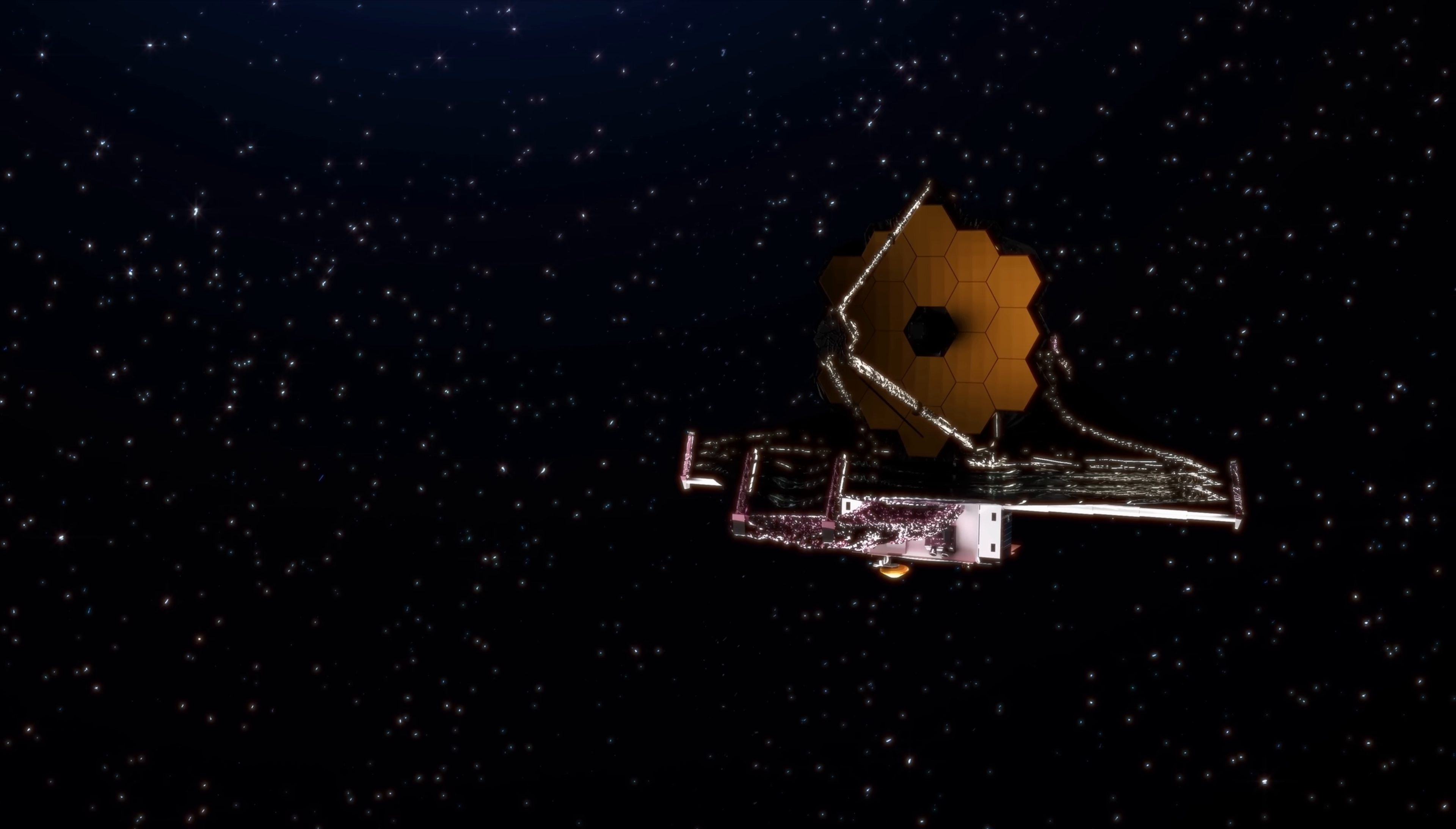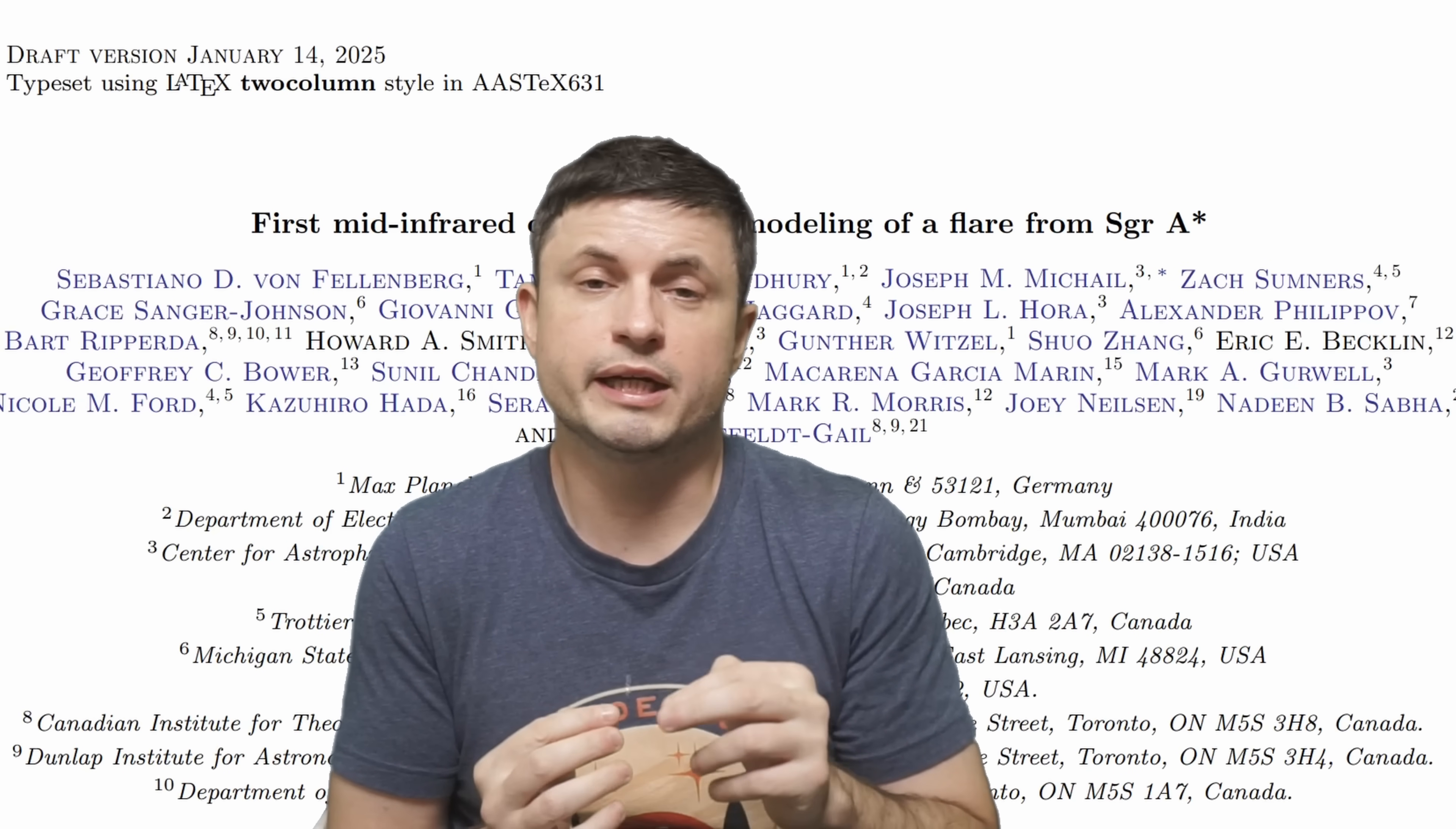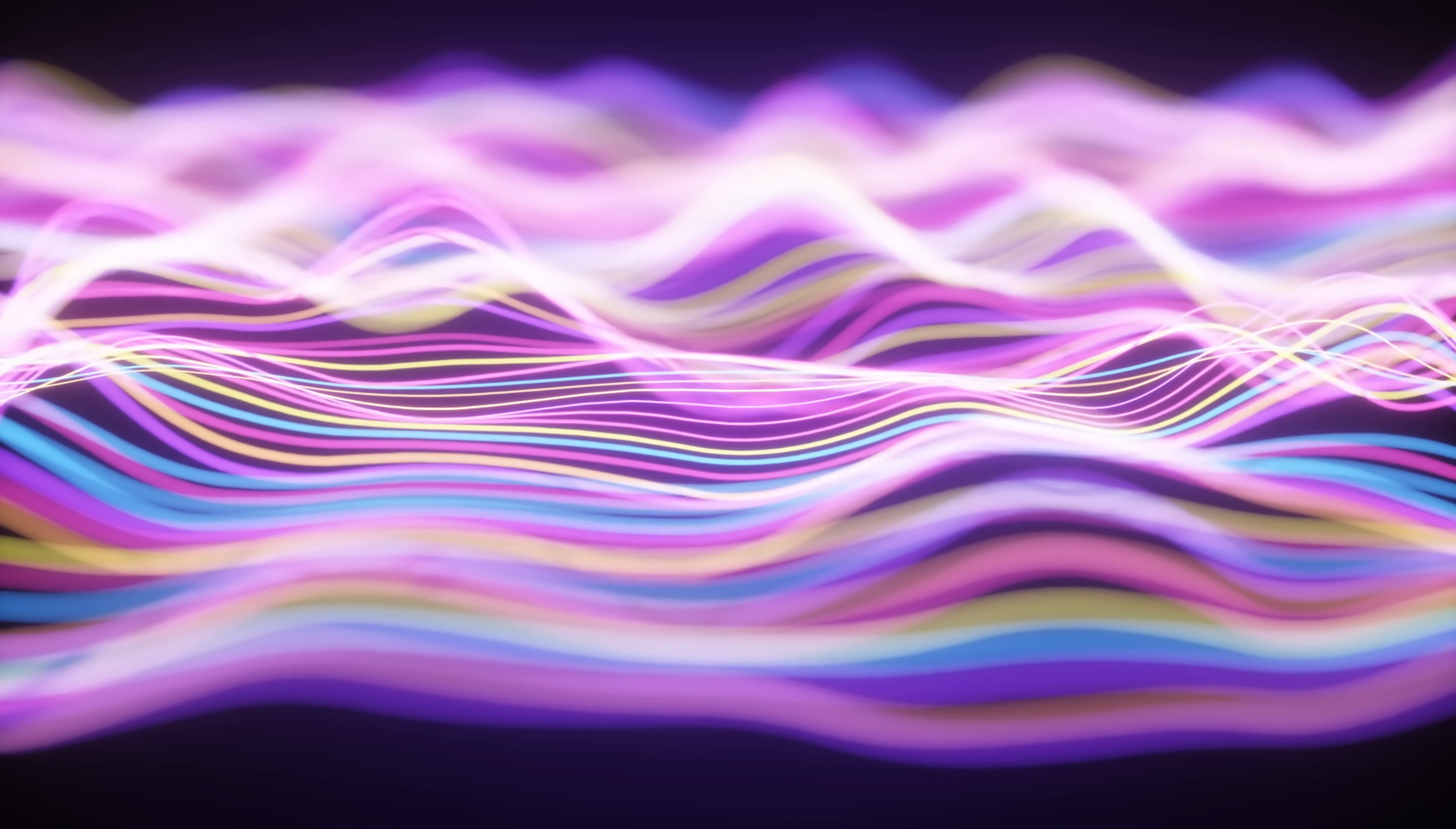But this mystery might sort of be resolved now through the observations from the James Webb, specifically the most recent observations and study by Sebastiano von Fallenberg that was just released in January of 2025. This was the first observations of Sagittarius A star in mid-infrared light, or to be more exact, it was the first detection of a flare in mid-infrared light that was then followed by radio emissions that allowed scientists to explain what's happening.